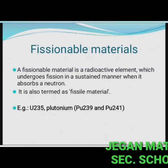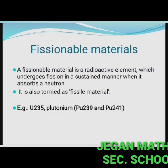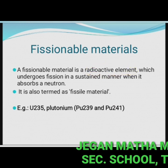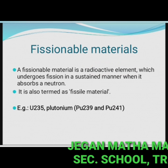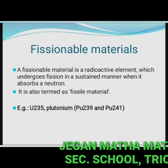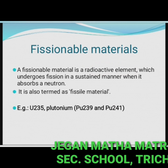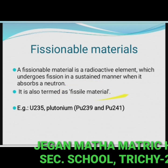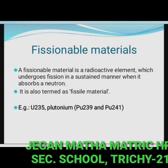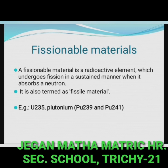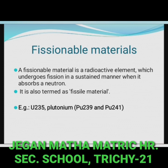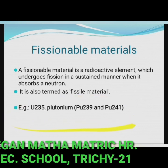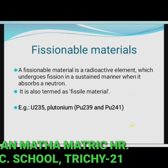Fissionable materials: a fissionable material is a radioactive element which undergoes fission in a sustained manner when it absorbs a neutron. It is also termed as fissile material. Examples include uranium-235 and plutonium-239 and 241.